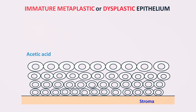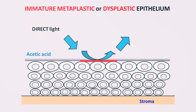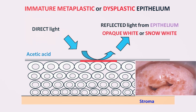However, if you focus the light on immature metaplastic epithelium or dysplastic epithelium, it is thick and multi-layered but the cytoplasm is limited. The nuclei are hyperchromatic and large, and the light doesn't go up to the stroma but is reflected back from the cervix. It becomes opaque or snow white, and the cervix looks like this — this is called the aceto-white epithelium.